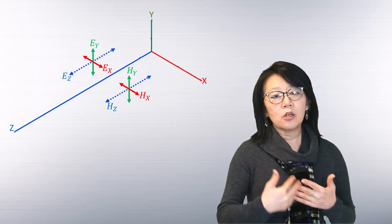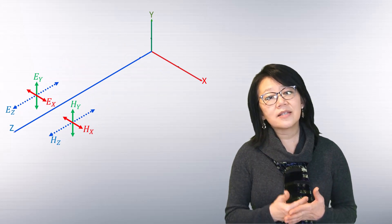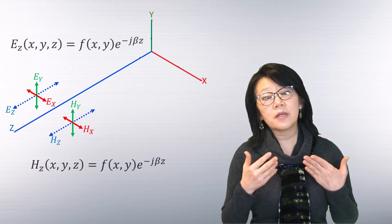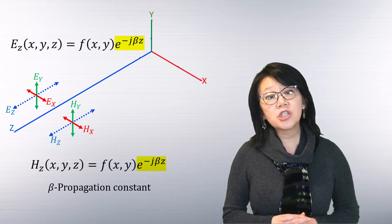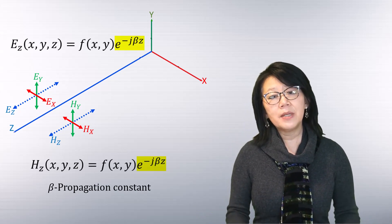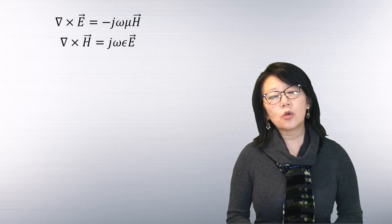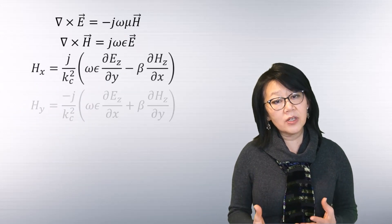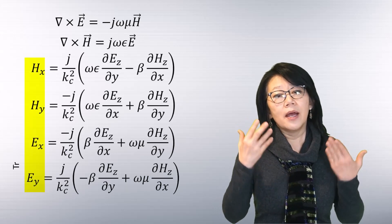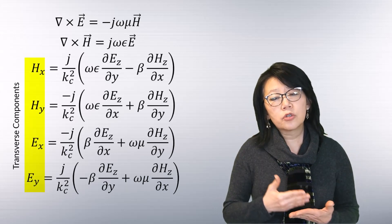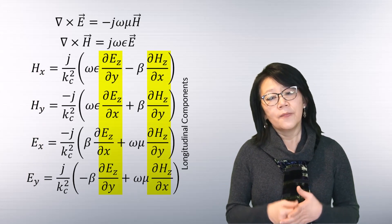These fields are propagating along the z axis, so the variation along the axis will be in terms of e to the minus j·beta·z, where beta is the propagation constant for that medium or dielectric. Expanding these equations in terms of the individual components and expressing the transverse components in terms of the longitudinal components gives you these equations.